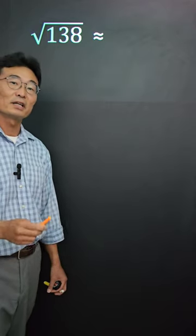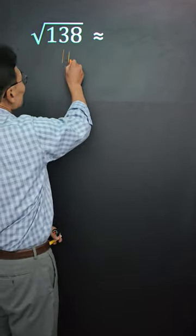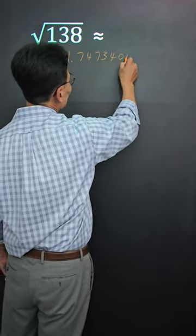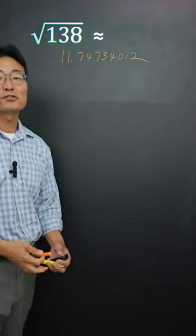When you take the square root of 138 and plug it into the calculator, it'll give you 11.74734012. But here's a way to do this without a calculator.